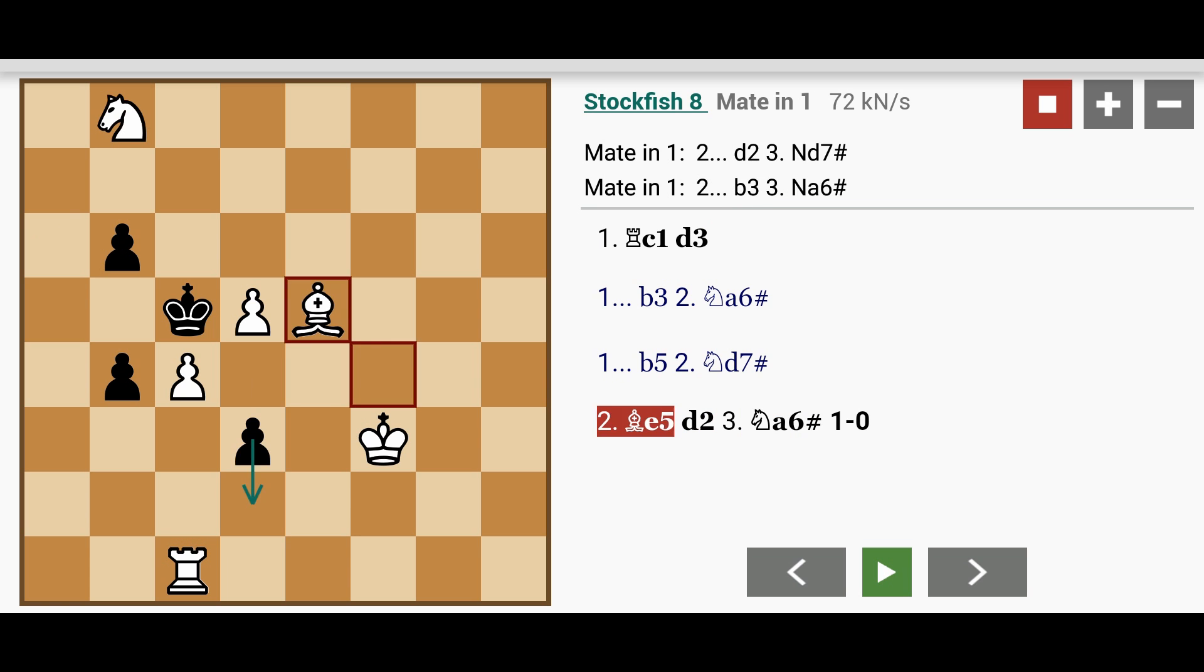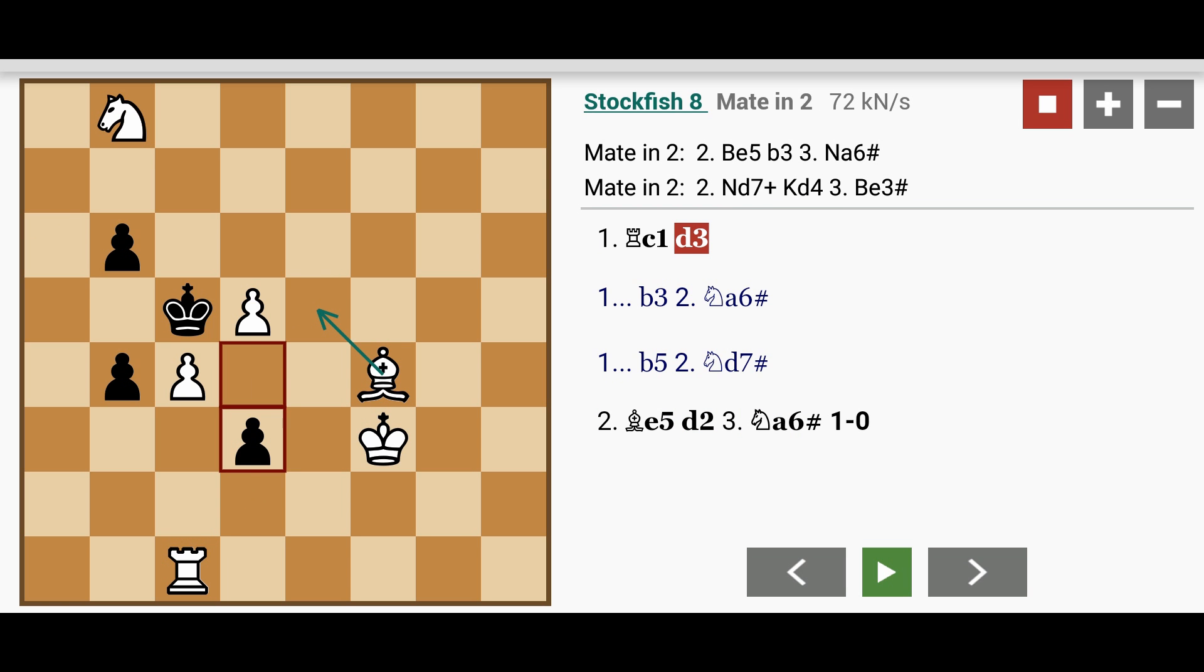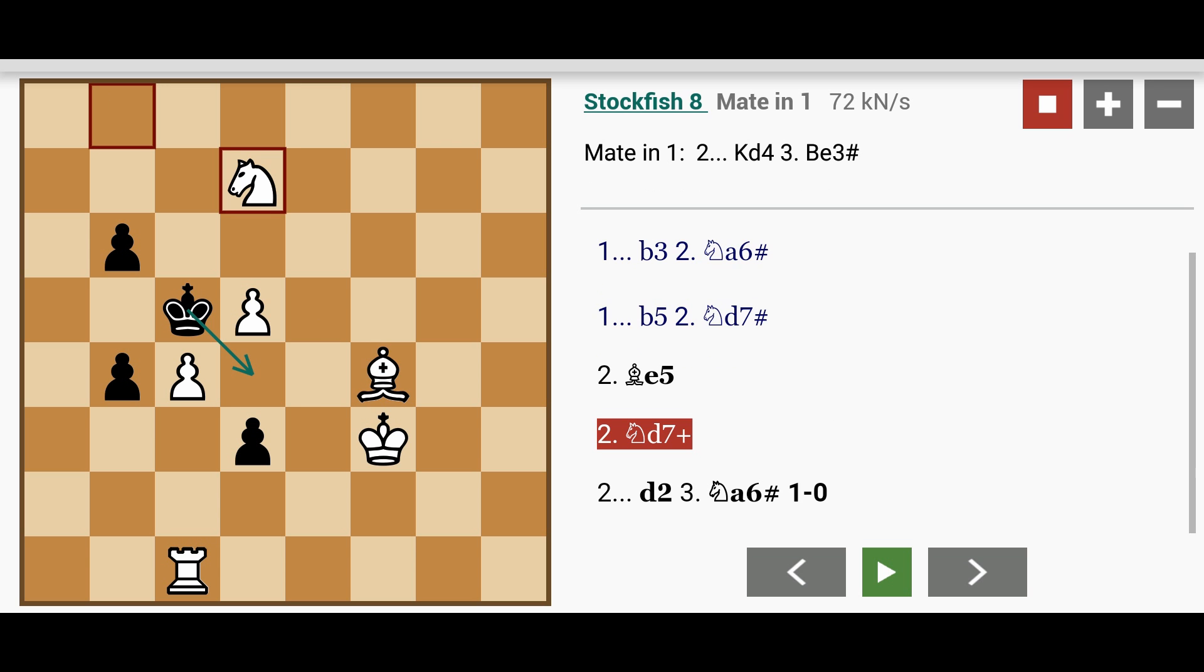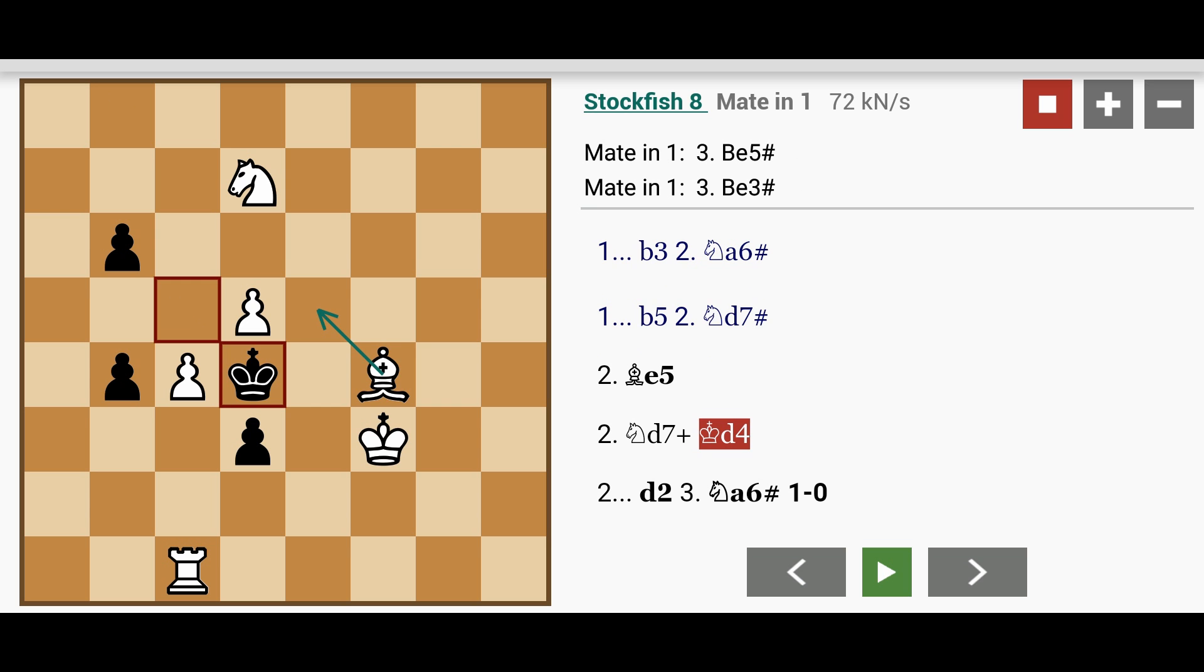Now if we try the other variation here, instead of bishop to e5, we have knight to d7, check. The king has only got one escape square, king to d4. And then either bishop to e5 checkmate, the bishop being defended by the knight here, or bishop to e3 checkmate, the bishop being defended by the king.